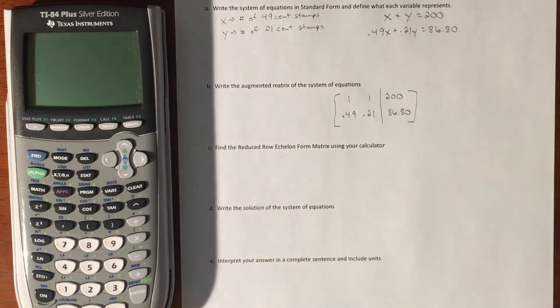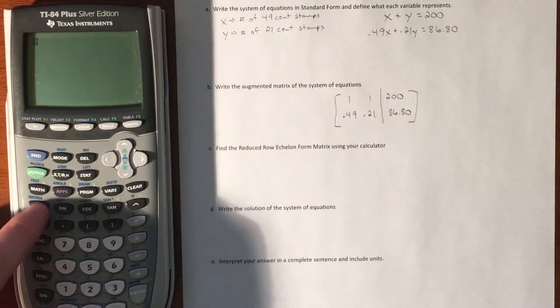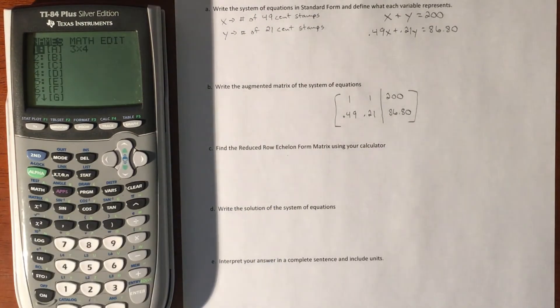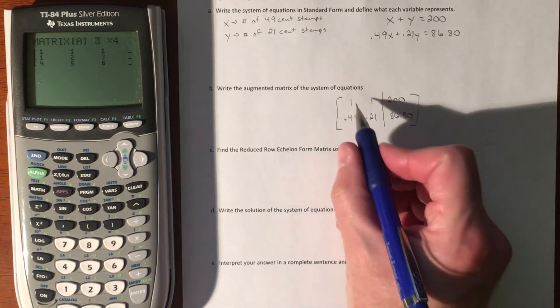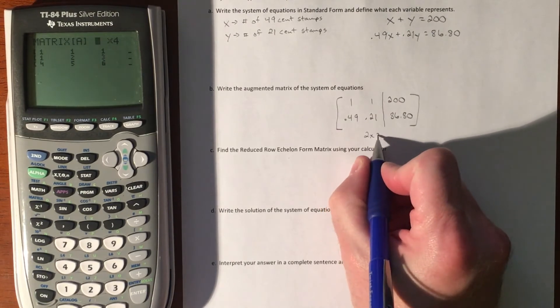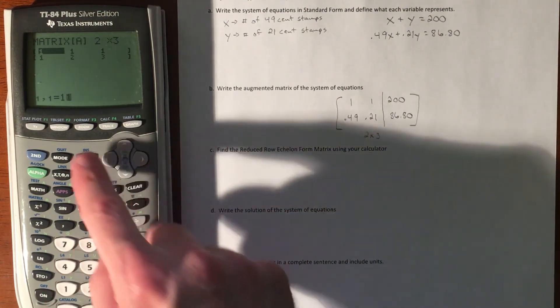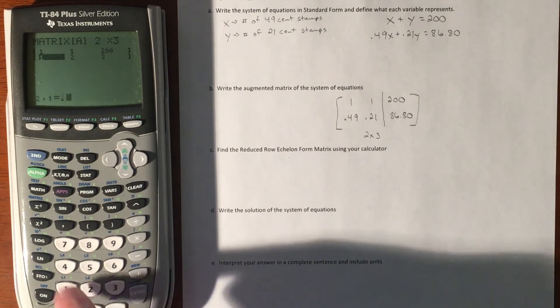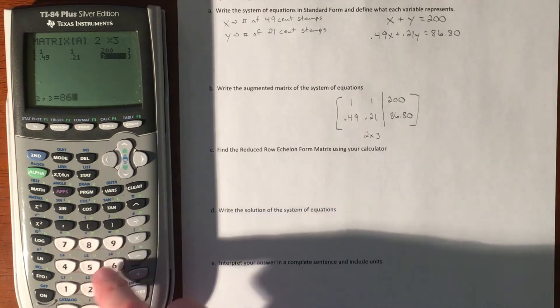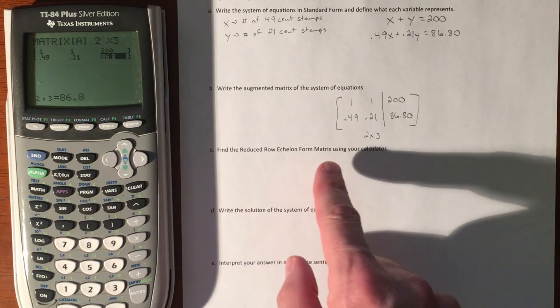Getting into the calculator, we're going to go into the matrix world and edit. First off, this is a 2 by 3 matrix. We have 1, 1, 200, and then we have 0.49, 0.21, and 86.80.